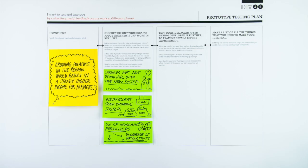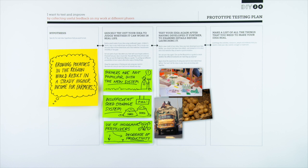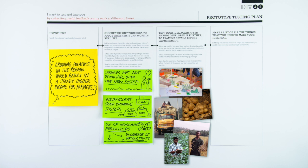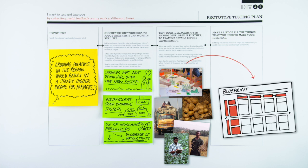They test the idea again by demonstrating the model with sample farmers and experts in agriculture. With their feedback, Helen and her team refine the model and create a blueprint to map out how all the new elements work.